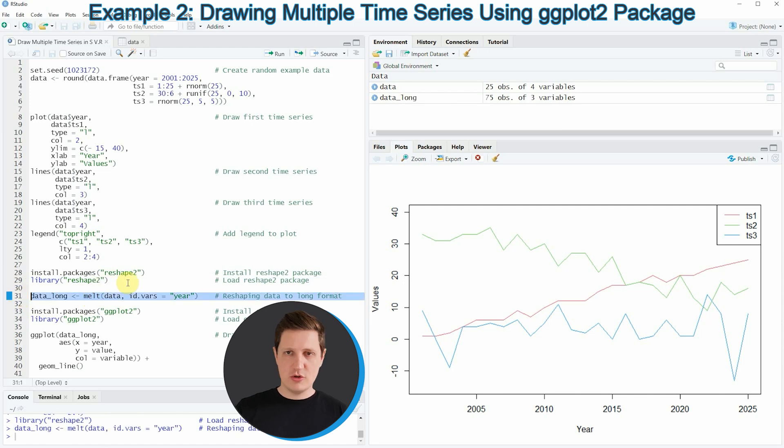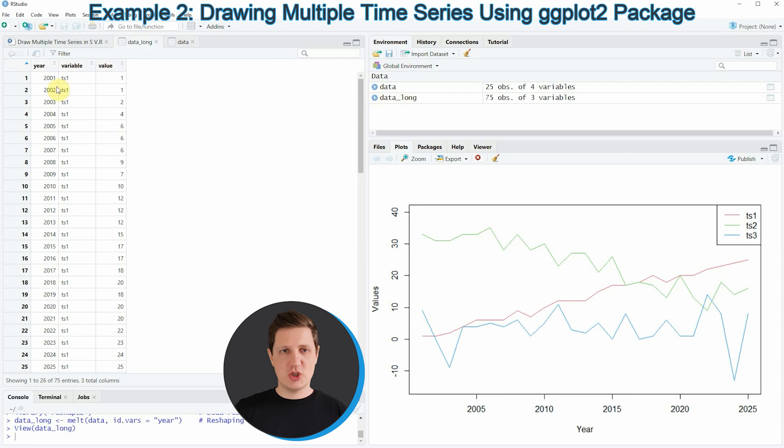If you run line 31 of the code you can see that another data frame object appears at the top right of RStudio which is called data_long. If you click on this data object you can see that our data frame was converted from wide to long format.